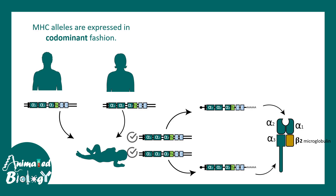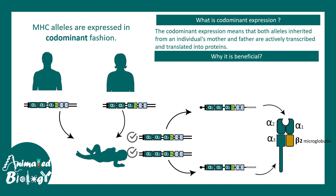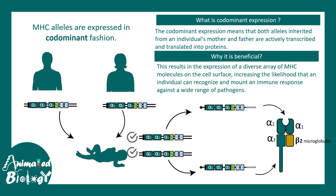Another important feature of MHC alleles is codominant expression, meaning alleles from both the mother and the father are active — mRNA is transcribed from both the paternal and maternal copies. Codominant expression is beneficial because it results in the expression of a diverse array of MHC molecules on the cell surface. If only paternal versions were expressed it might not be as diverse, but combinatorial expression of paternal and maternal copies increases diversity automatically. The entire goal of the immune system is to create a diverse set of MHC molecules.